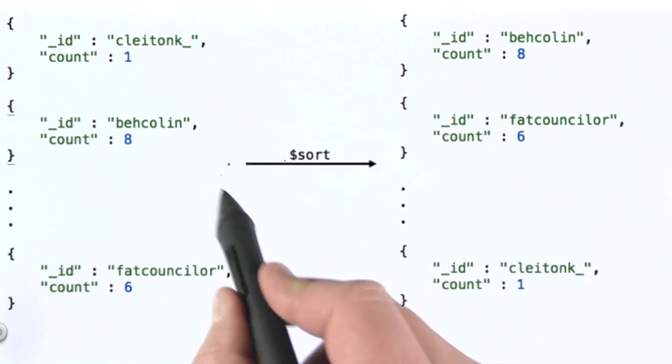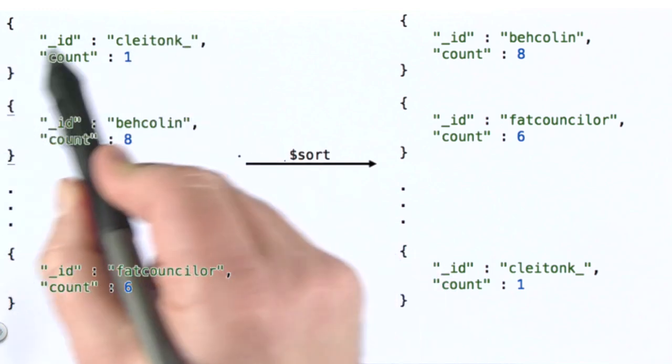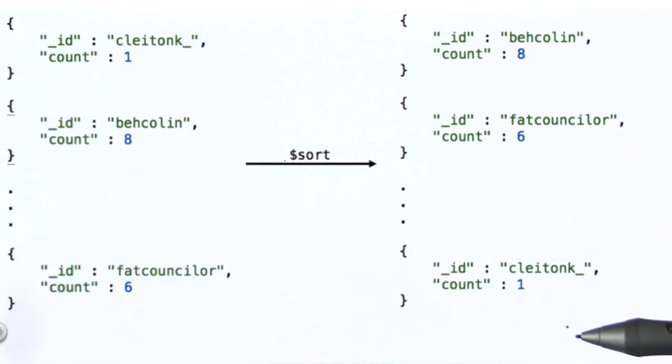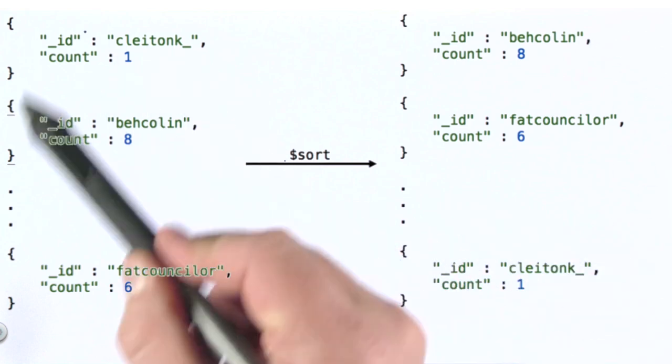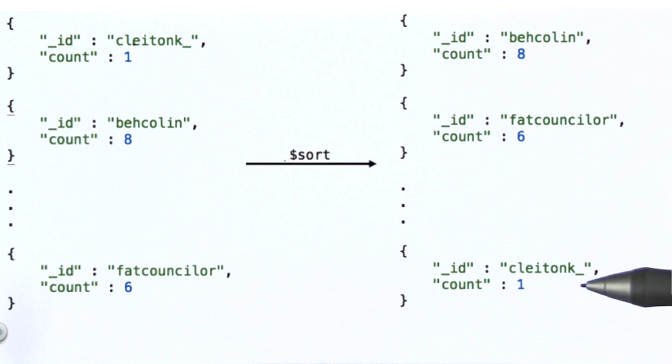The sort stage then takes this type of document as input and produces this as output. Remember, sort is sorting into reverse order, so it's producing documents that look exactly the same as these, simply sorted so that the ones with the highest count are at the top.